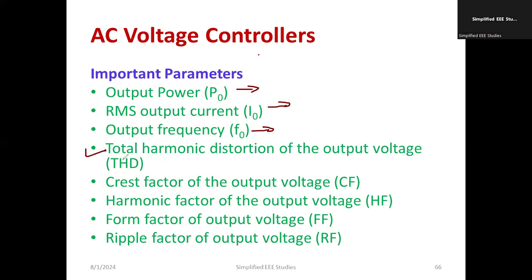THD, total harmonic distortion. We'll be checking about the distortion level. And we'll be considering crest factor. And harmonic factor, HF. Similarly, form factor. RMS value by average value. Ripple factor. VRMS by VAC. We'll be considering how much amount of AC content is present inside DC output. That is called ripple factor. So these are the parameters which we are going to consider for the selection of AC voltage controller.